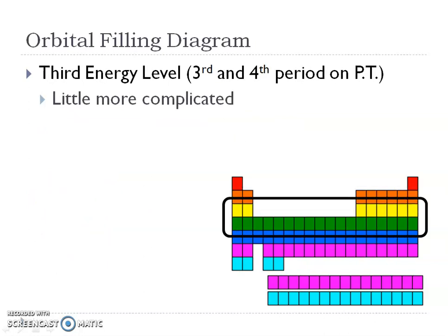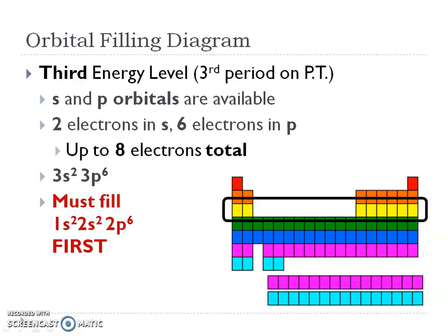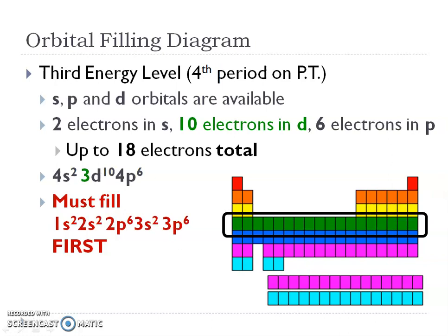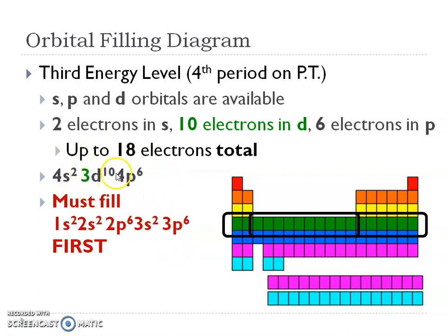The third and fourth periods get more complicated. In the third period, we again have S and P orbitals, with a maximum of eight electrons — similar to period two. But in the fourth period, we have S, P, and D orbitals available. We have two electrons in the 4S, then 10 electrons filling the 3D shell in the transition elements, then six electrons in the 4P — for a total of 18 electrons. So the order is 4S2, then 3D10, before 4P6, always filling in order of energy.